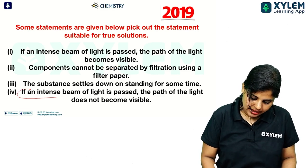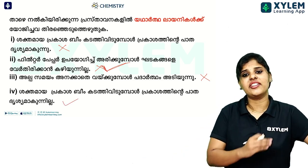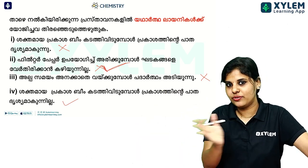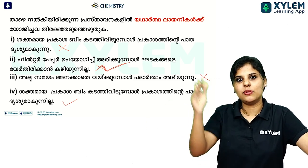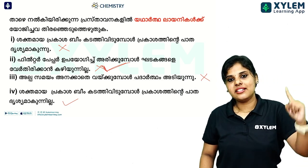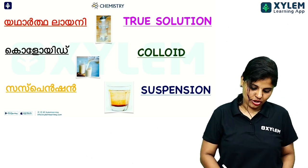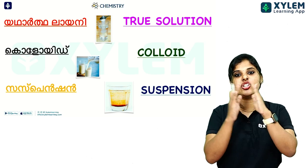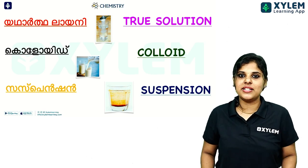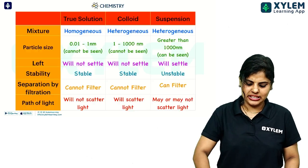The last statement: if an intense beam of light is passed, the path of light does not become visible. That is correct for true solution — the light beam path is not visible. True solution examples are salt solution and sugar solution. Colloid examples are milk. Suspension examples are muddy water.